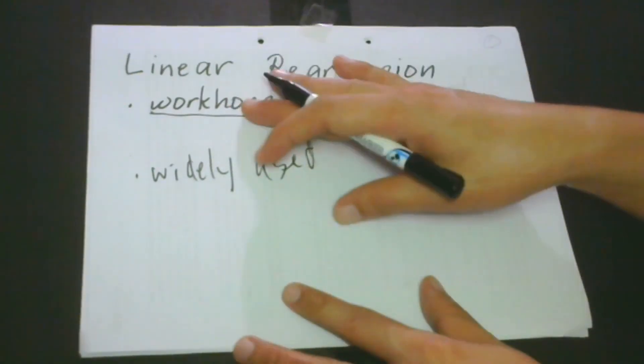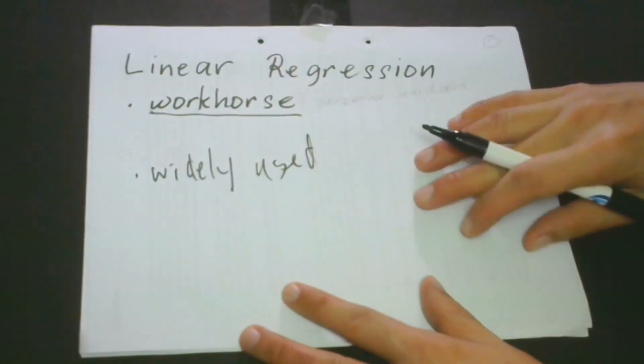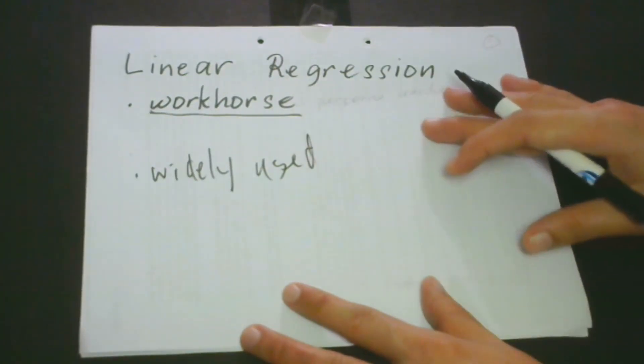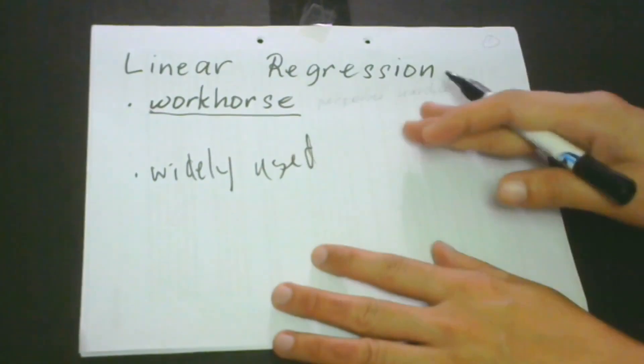So maybe you would like to ask me why is it that this model, linear regression, is called the workhorse. It's because it really performs hard work so as to make a connection between statistics and supervised learning.